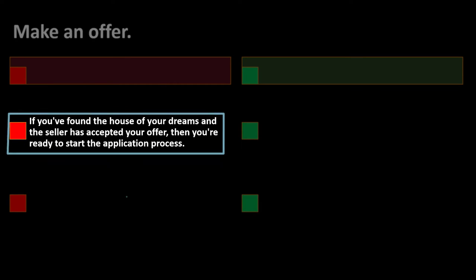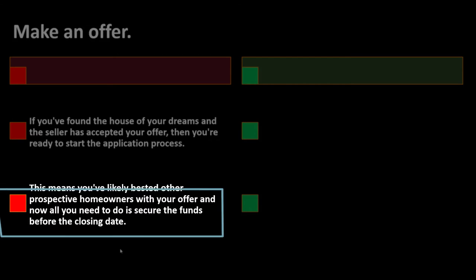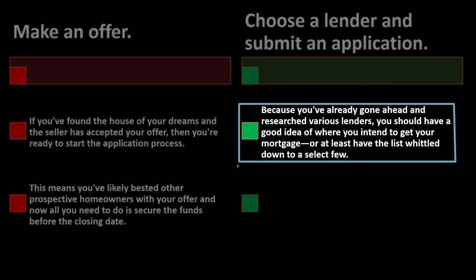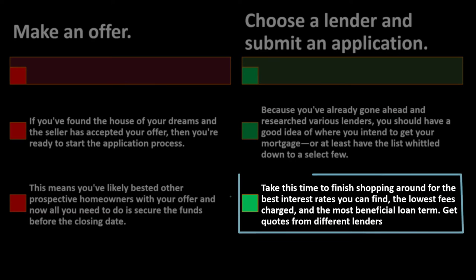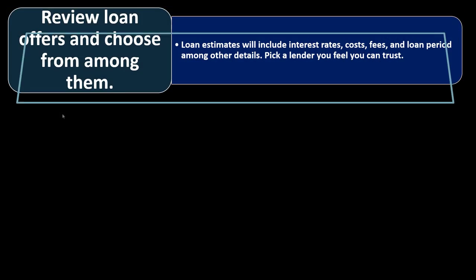Make an offer. If you've found the house of your dreams and the seller has accepted your offer, you're ready to start the application process, having likely bested other prospective homeowners. Now all you need to do is secure the funds before the closing date. Choose a lender and submit an application. Since you've already researched various lenders, you should have a good idea of where you intend to get your mortgage. Take this time to finish shopping for the best interest rates, lowest fees, and most beneficial loan term. Get quotes from different lenders, review loan estimates including interest rates, costs, fees, and loan period, and pick a lender you feel you can trust.